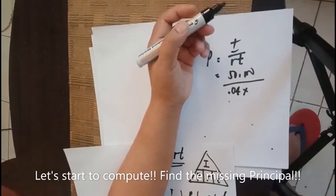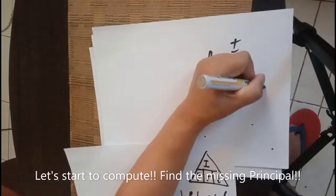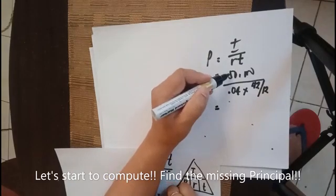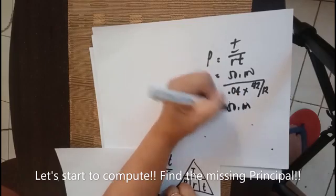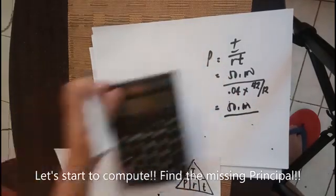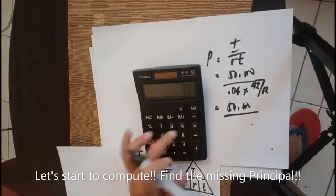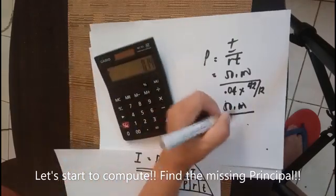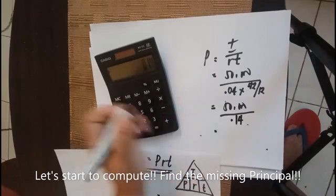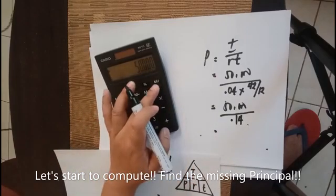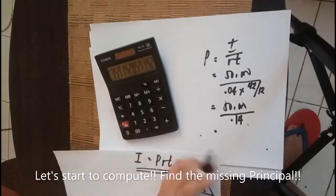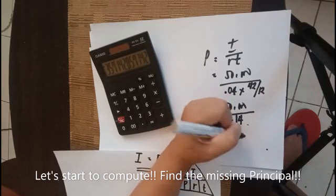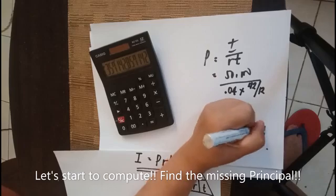So 36 plus 6, we have 42 months over 12. That's the denominator, so we need to compute first the denominator before the upper part. So we'll just fill in the 50,000 divided by 0.04 multiplied by 42 over 12, so we have 0.14. So 50,000 divided by 0.14, the result is principal is $357,142.86.